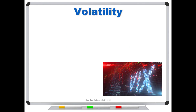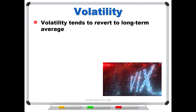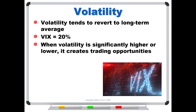The first thing to understand is that volatility tends to revert to its long-term average — what's called mean reversion. A common measurement of volatility is the VIX, or the Volatility Index. Going back to about 1990, the long-term average is about 20%, but it can get much higher and also lower. Usually if it dips below 10%, that's about as low as you'll see it. When volatility is significantly higher or lower than this 20% average, it creates trading opportunities.